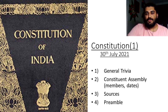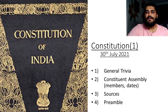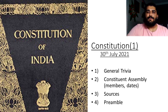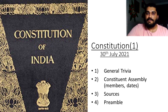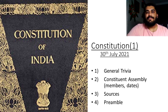In this session, we're going to cover four important topics. The first will be a general introduction to the Constitution — general trivia that you could expect questions from. Then we'll discuss the Constituent Assembly, the members of the Constituent Assembly, the people who were very important in that, and some important dates that you might need to remember, because these are questions that Clat does ask. We'll discuss the sources of the Constitution and different parts thereof, and we'll discuss the preamble.